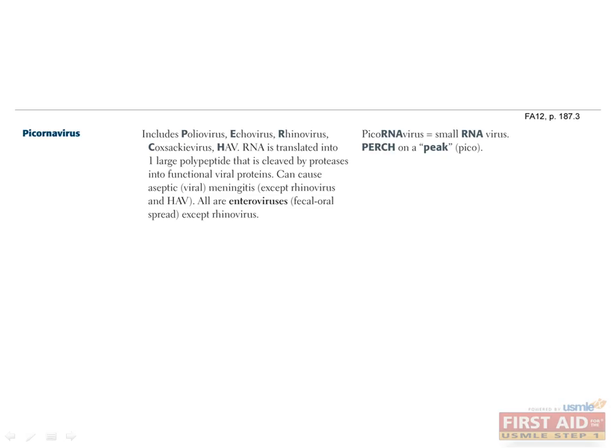The picornavirus family includes poliovirus, echovirus, rhinovirus, coxsackievirus, and hepatitis A virus. All viruses in this family except rhinovirus are enteroviruses because they are spread by the fecal-oral route.